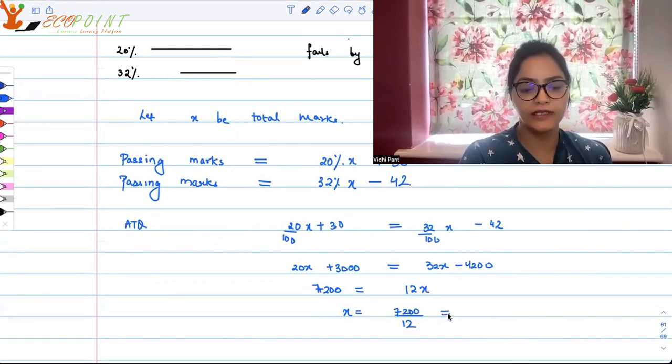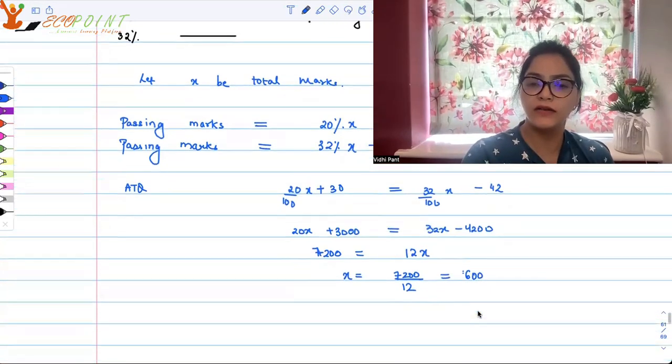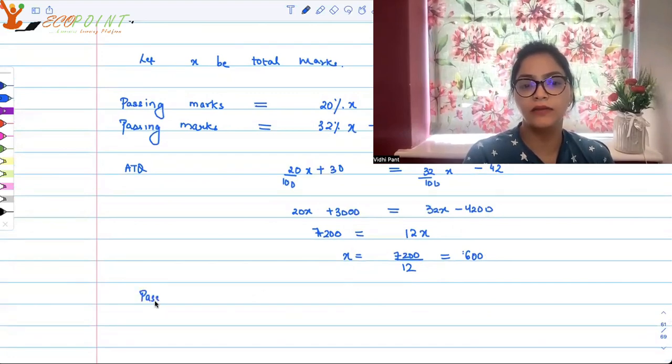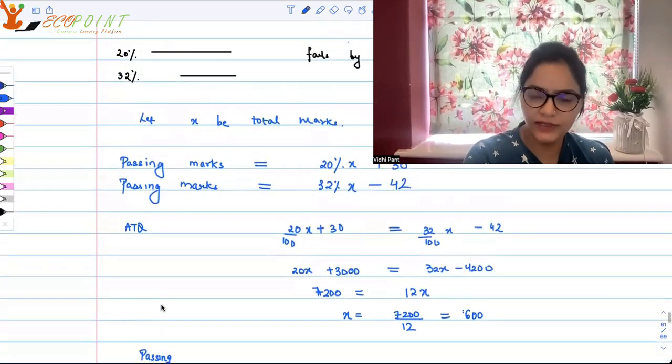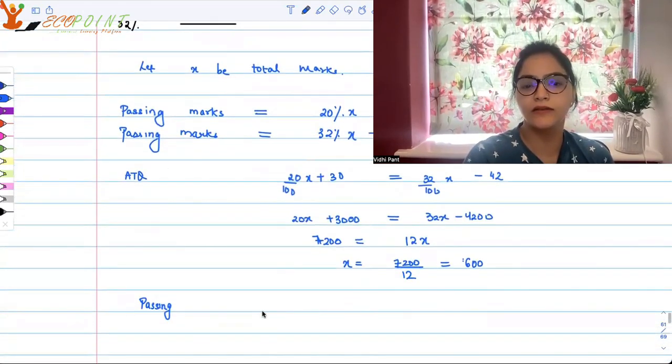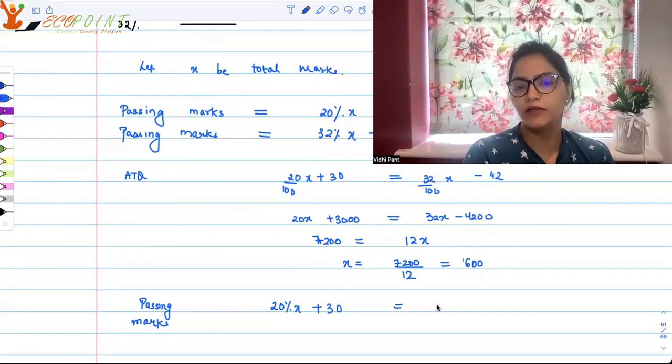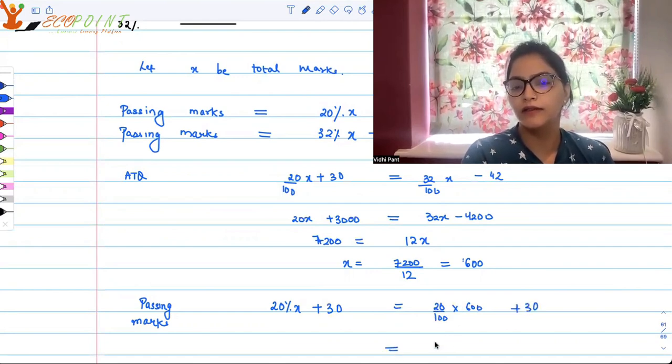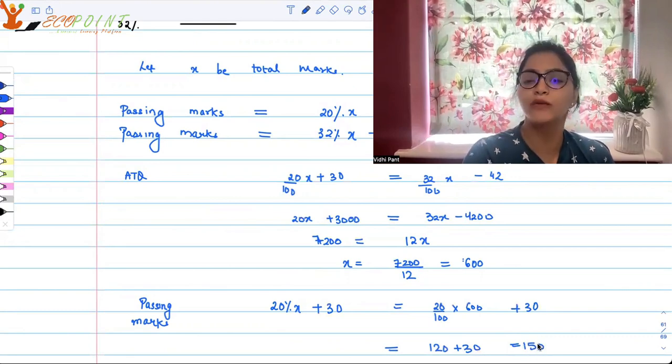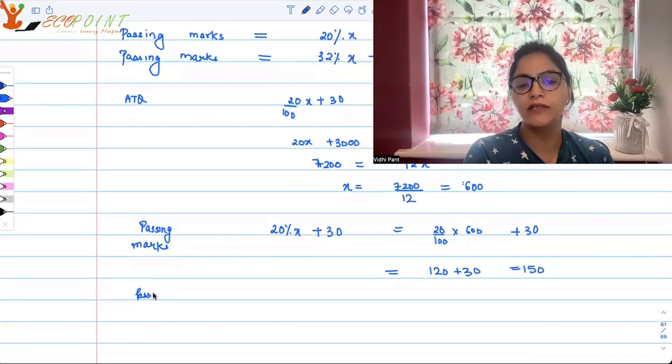So 600 is your total marks. Now let's figure out passing percentage. The passing percentage is 20 percent of x plus 30 as my passing marks. That means 20/100 × 600 + 30, which gives us 120 plus 30, equals 150.